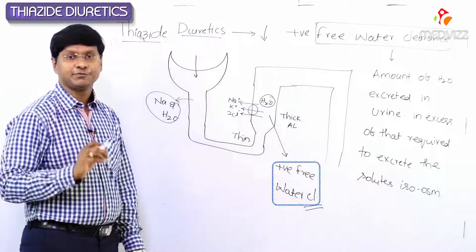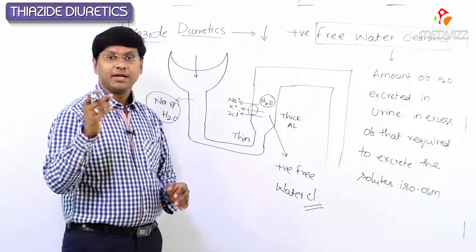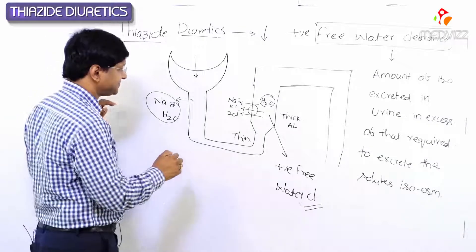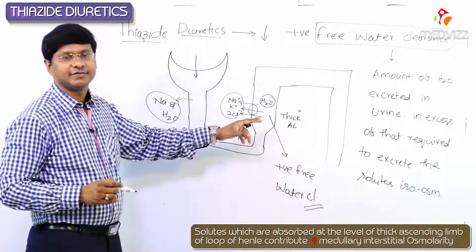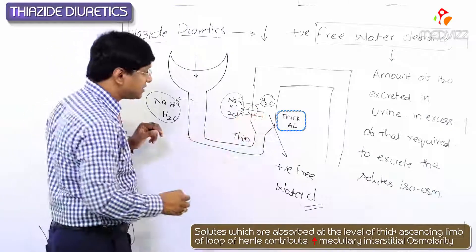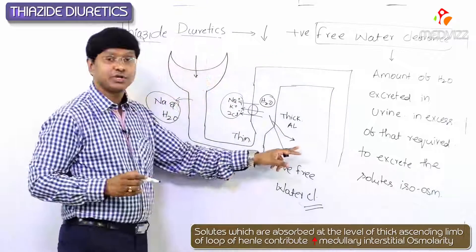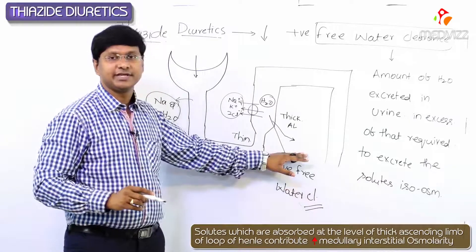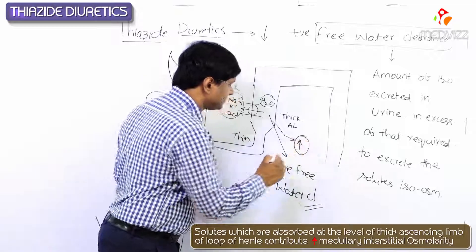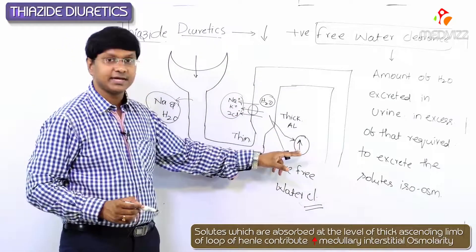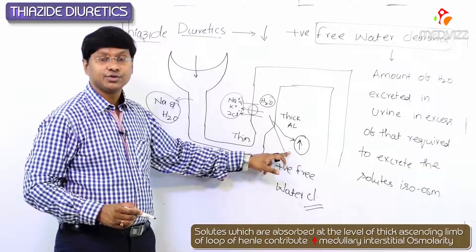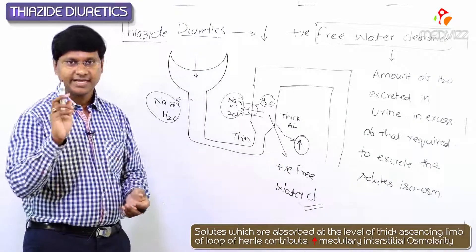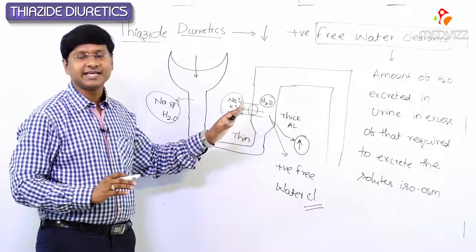At the level of the distal convoluted tubule — but before going into that — remember the solutes which are being absorbed at the level of the thick ascending limb of the loop of Henle contribute to increased osmolarity of the medullary interstitium.